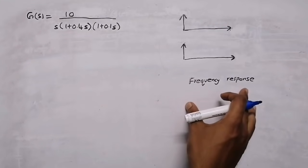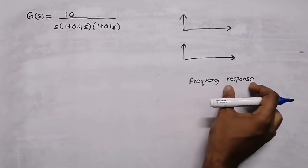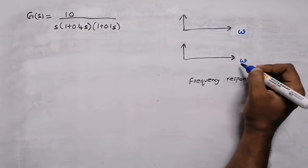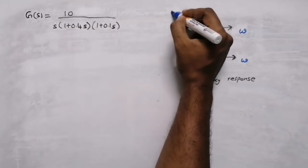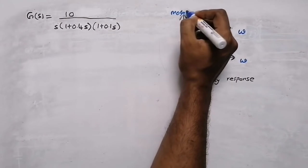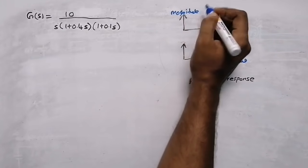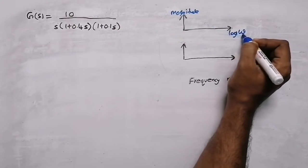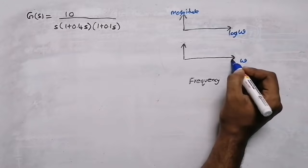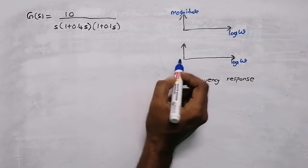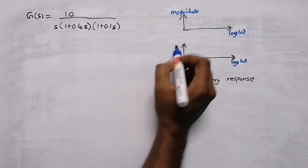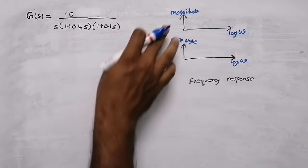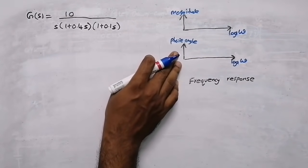A Bode plot is a frequency response graph where the response depends on frequency — omega. The first response is the magnitude response, which depends on log frequency. The x-axis is log frequency and the y-axis is the response. There are two graphs: one is the magnitude plot and the other is the phase angle plot, both depending on frequency.